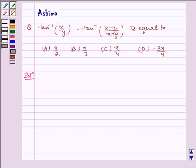Hello and welcome to the session. Let us understand the following problem today. Tan inverse x by y minus tan inverse x minus y by x plus y is equal to: (A) pi by 2, (B) pi by 3, (C) pi by 4, (D) minus 3 pi by 4.